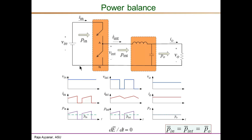The three quantities on the left correspond to what happens at the input port — the voltage, current, and power waveforms. The input voltage is a constant DC value. Current is drawn from the input source only when the top switch is on. During that interval, the current flowing through the switch and drawn from the input source equals the inductor current — that portion of the waveform is the input current during the switch-on interval.